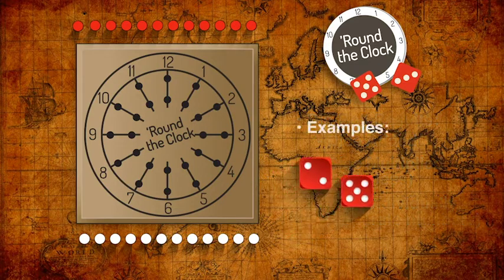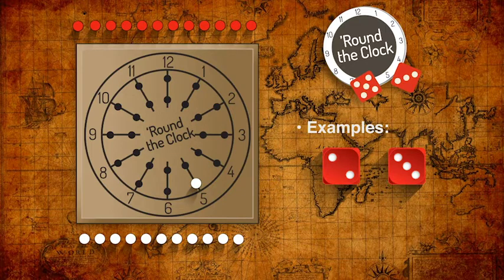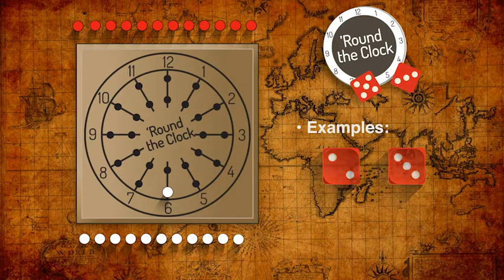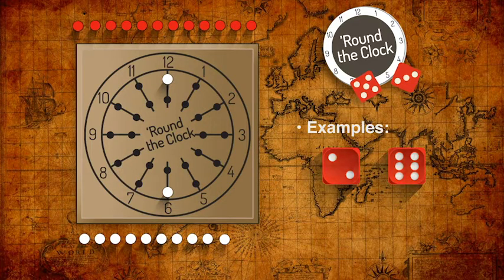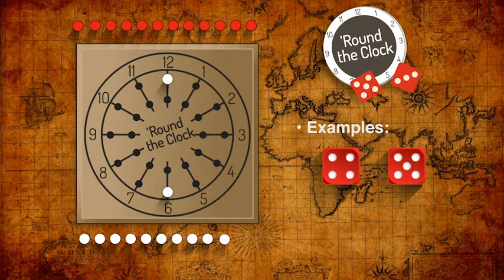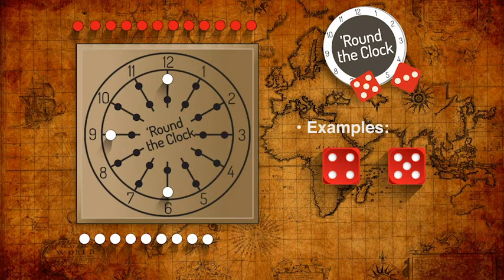Here's an example. A die roll of two and three can be used to claim the two and the three, or the five — which is two plus three — or the six, which is two times three. In this case, the white player rolled a two and a six, with which they could claim the two and a six, or the eight — two plus six — or multiply that to claim the twelve, two times six. And this example shows the result of a four and a five: the player can claim either the four and the five, or the nine, but multiplication doesn't work for this result.